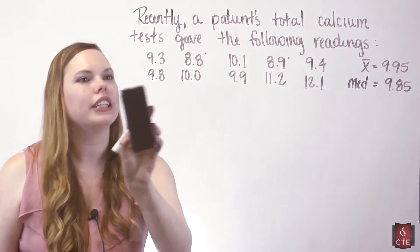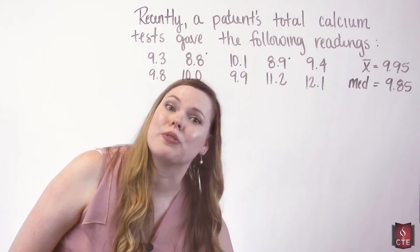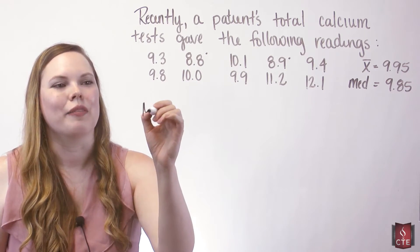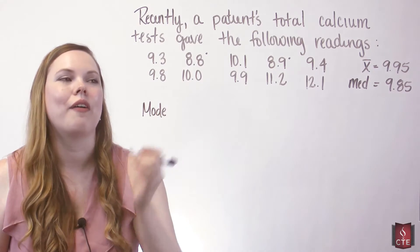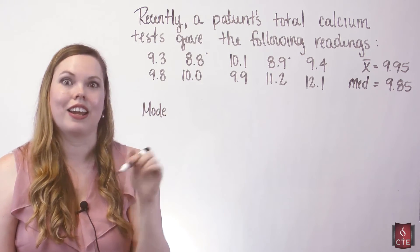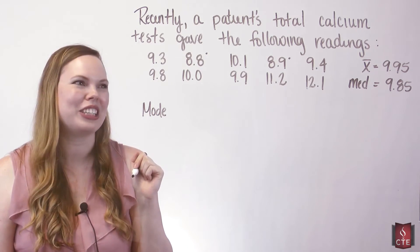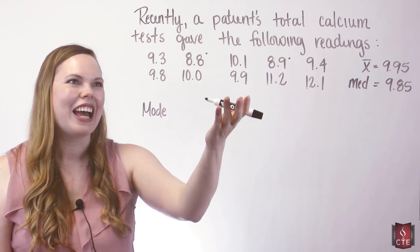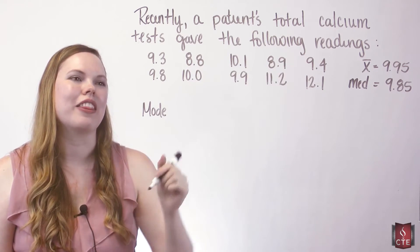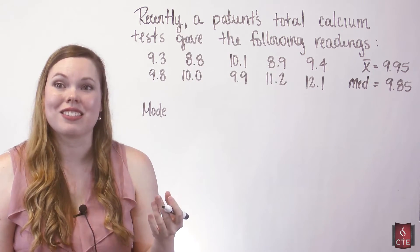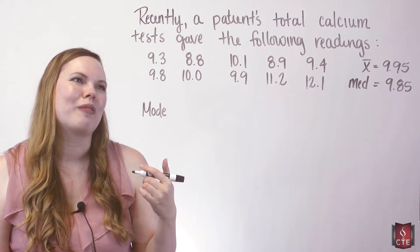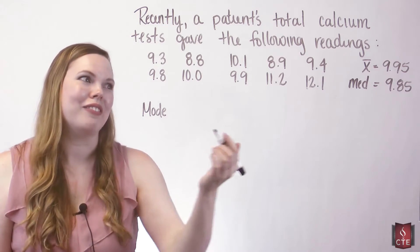Notice how close the median of 9.85 is to our mean of 9.95. The mean is affected by outliers — we have a bit of a jump from 11.2 to 12.1, which causes the mean to be slightly higher, but that's not really an outlier. The mode is the value that occurs the most often. Looking at this data set, we don't have any number that repeats, so we have no mode.